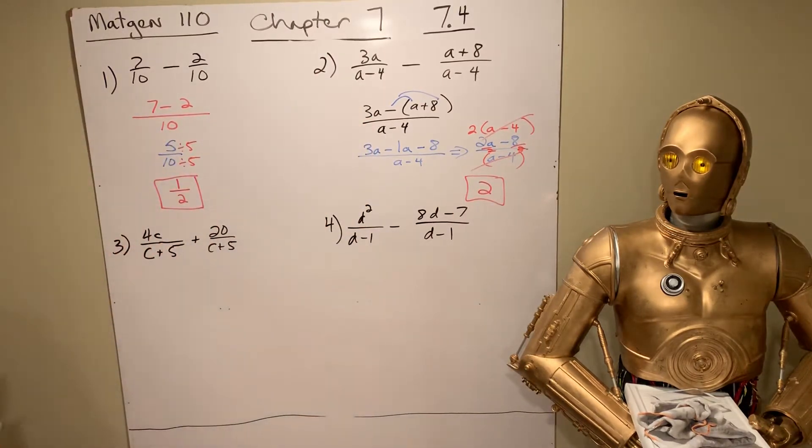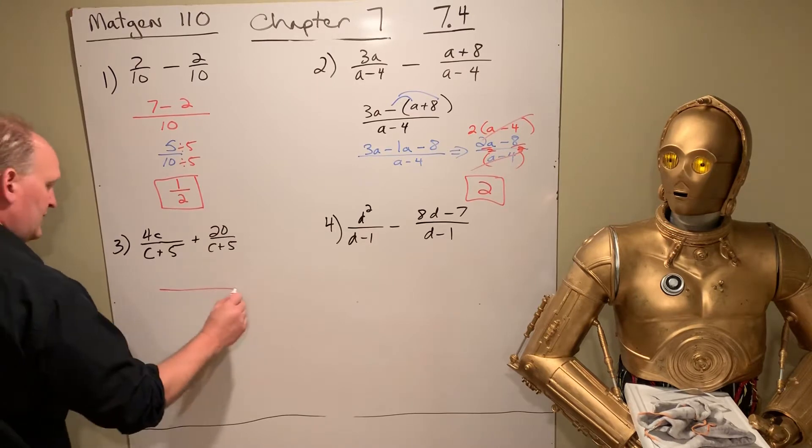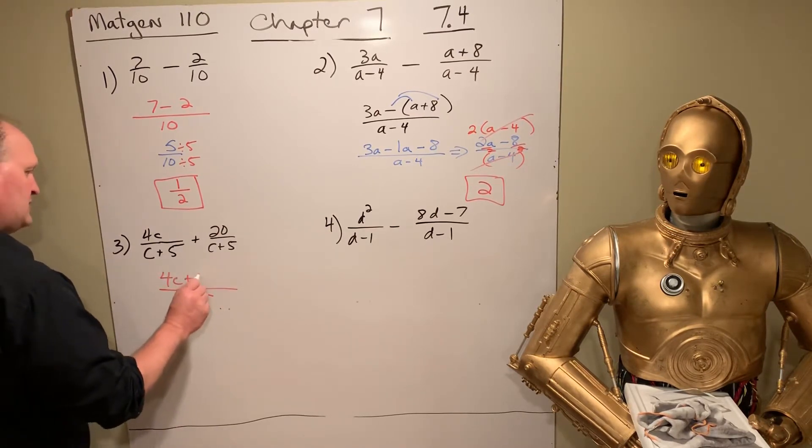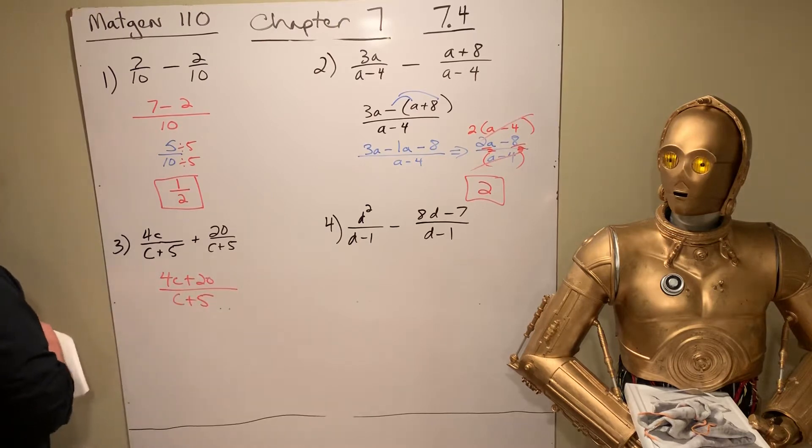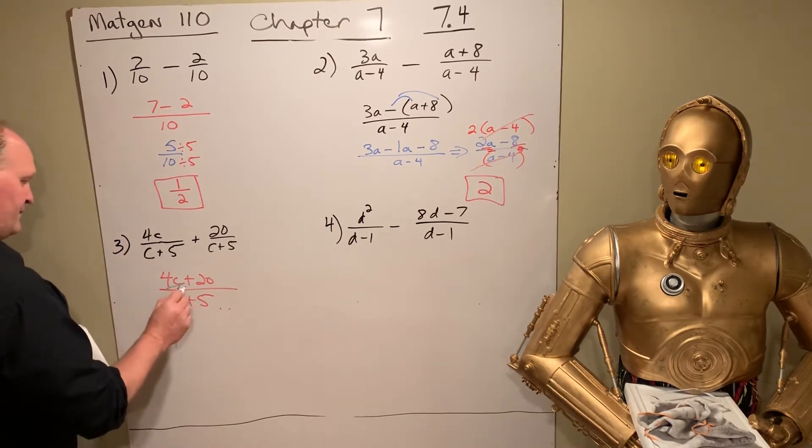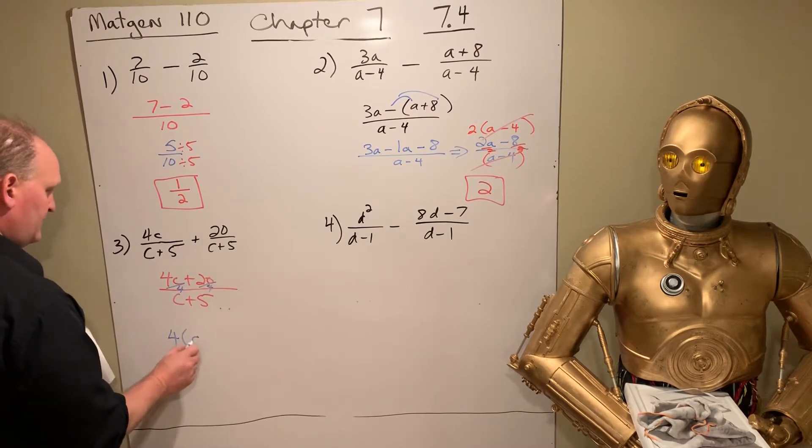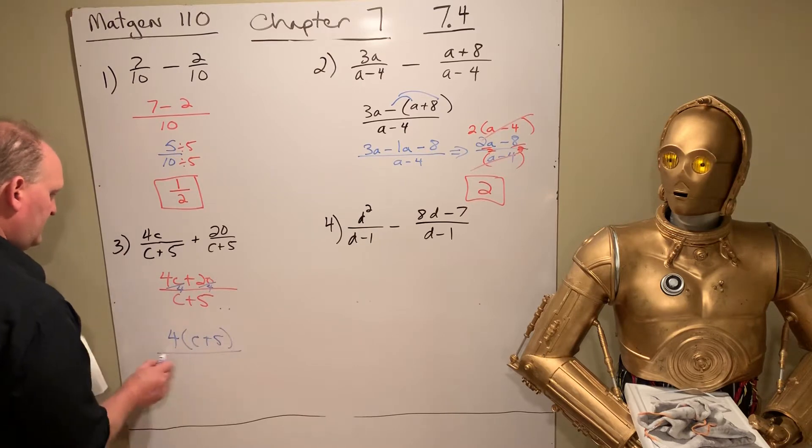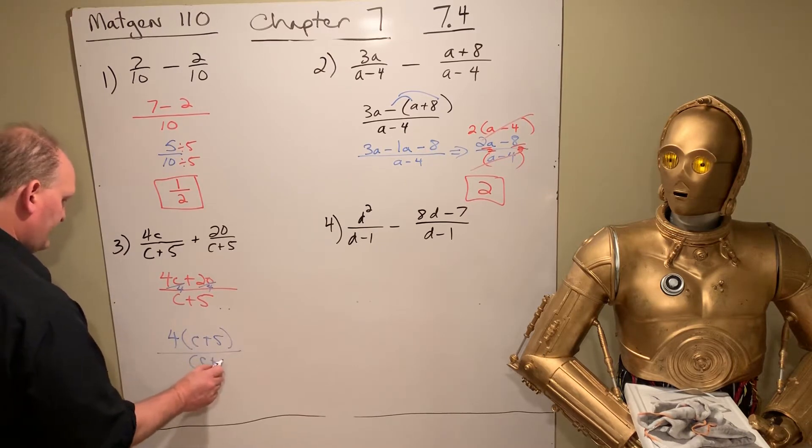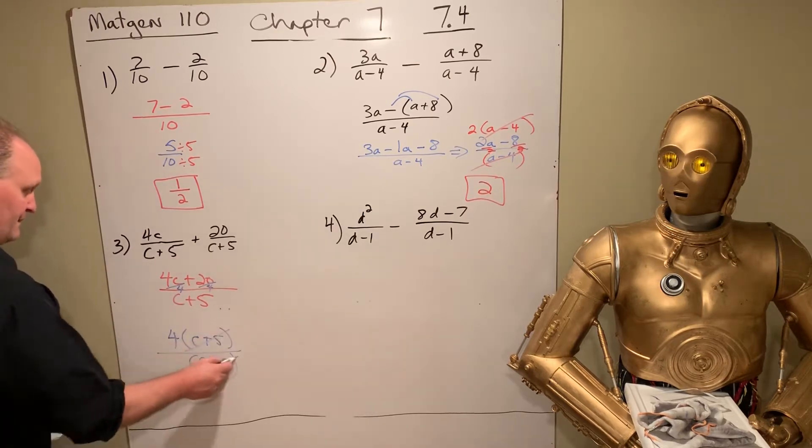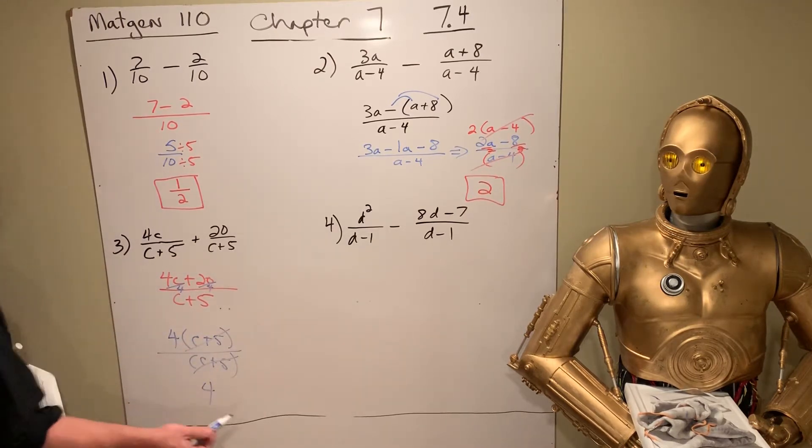Let's look at this one. We got C plus 5 on the bottom. We got 4C plus 20 on the top. We factor out a 4 on the top. And so then we have C plus 5 left over C plus 5. And then we can cancel the C plus 5s and just end up with 4.